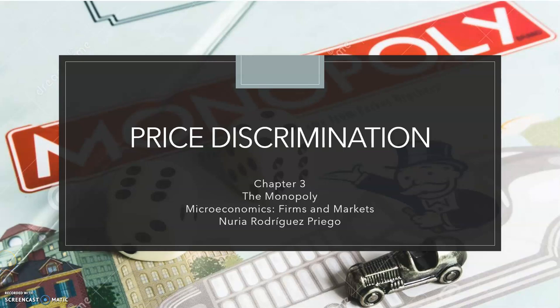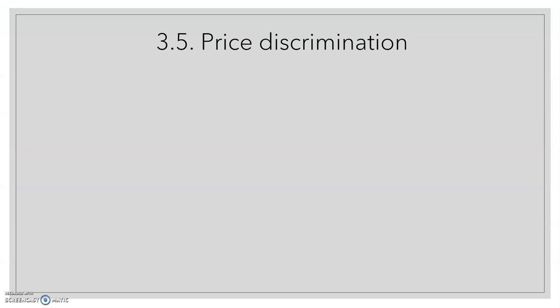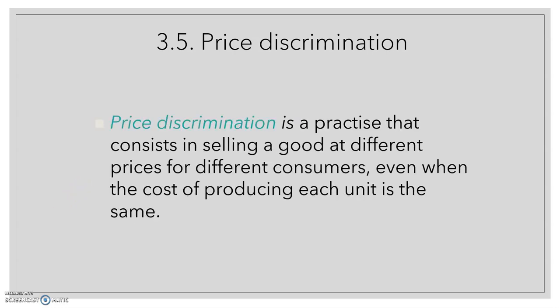Hi, this is the last video of Chapter 3, The Monopoly. In this video, we are going to talk about price discrimination. There are several pricing strategies that are useful in a monopoly, and they all have something in common: they can capture consumer surplus and transfer it to the producer. Instead of selling all products at the same price, firms can decide to sell a good at different prices for different consumers, even when the cost of producing each unit is exactly the same. This is called price discrimination.